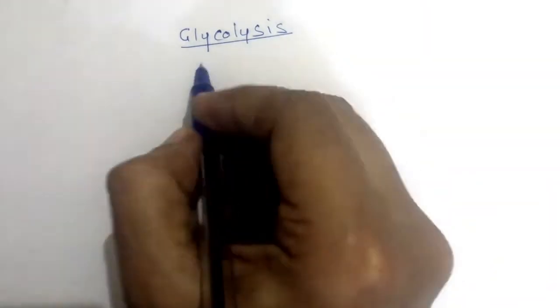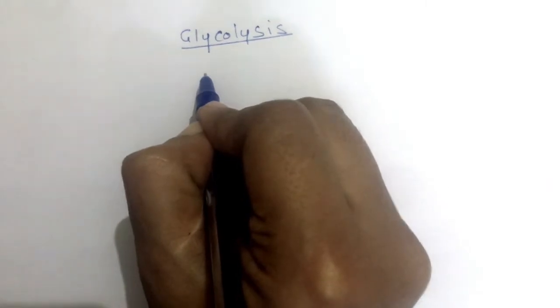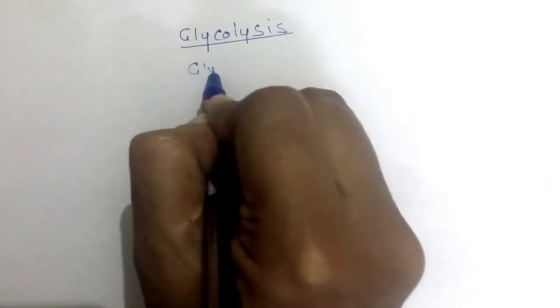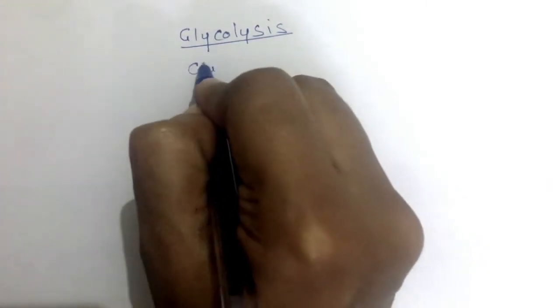Let's learn about the glycolysis pathway. Basically, it is the breaking down of glucose to generate energy. At the end, it converts glucose to pyruvate. So let us learn how it happens.